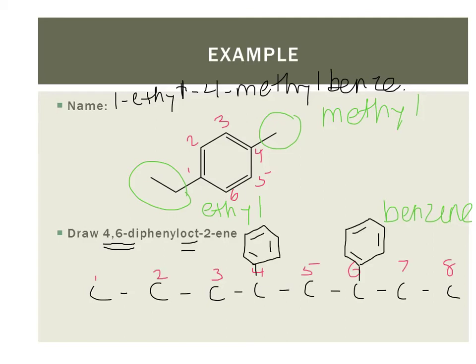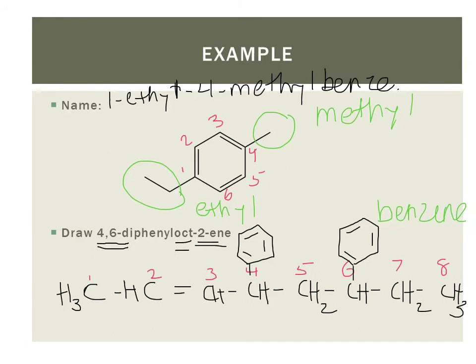And now the two-ene here is indicating that at carbon two, I have a double bond. Now the only thing left is to fill in my hydrogen so that there's four bonds to each carbon. And there you have it. Four, six diphenyl octa-2-ene.